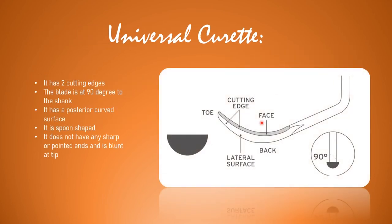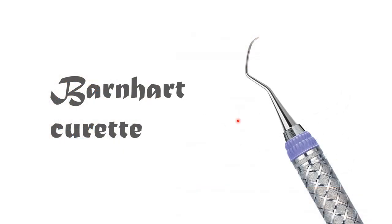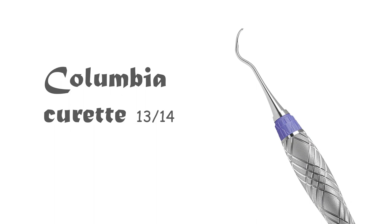From this picture you can clearly see the blade of the universal curette - it has two cutting edges and the blade is at 90 degrees from the shank. It has a convex or curved posterior surface, is spoon-shaped, and has a blunt tip with no sharp or pointed ends. This is one of the most commonly used universal curettes among dentists. This is the Barnhart curette, and this is the Columbia curette 13/14. There are various types of universal curettes with different shank angles.